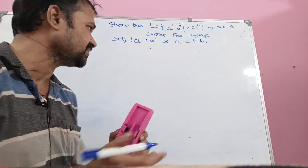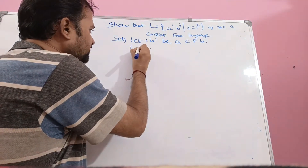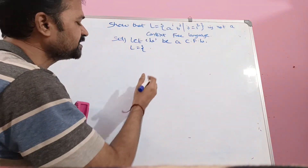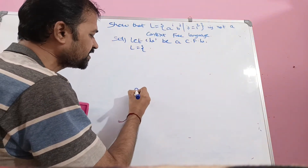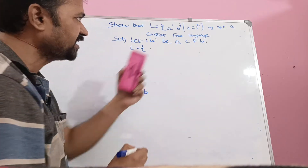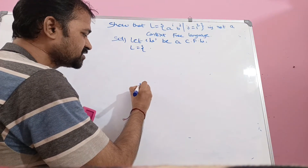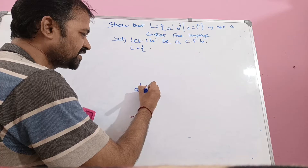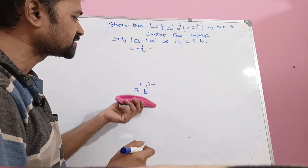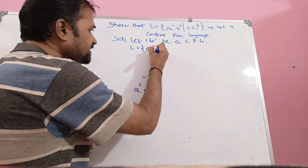Let us generate the language L. Initially, let us assume that i = 1, then a^1 · b^j where j = i² = 1². So a^1 · b^1, which we can write as 'ab'.